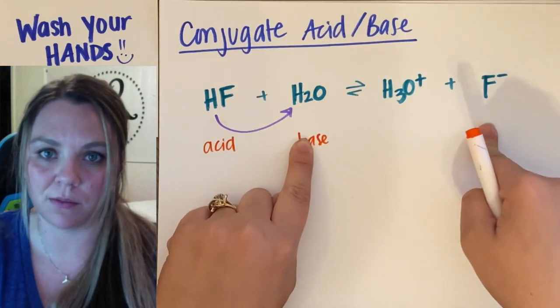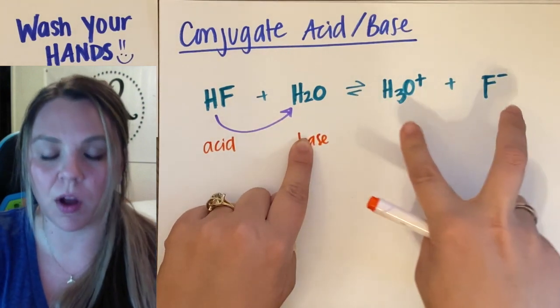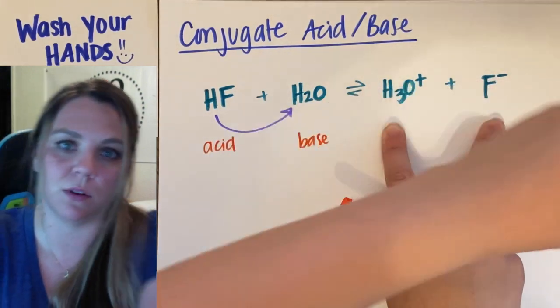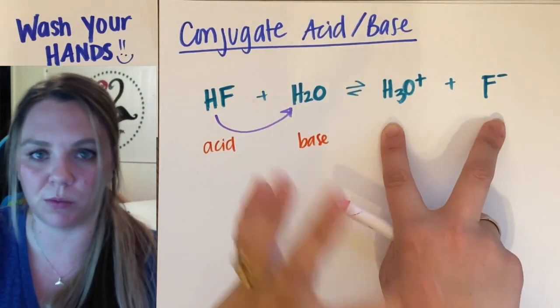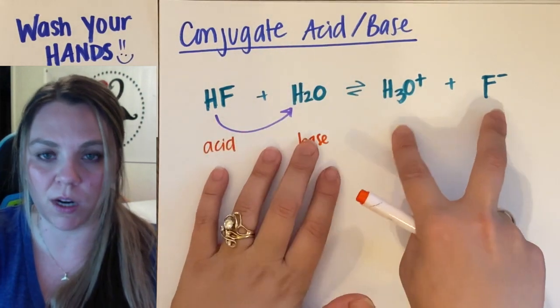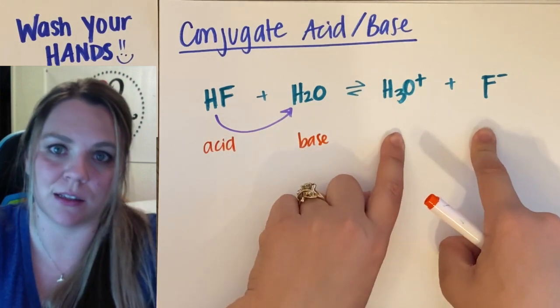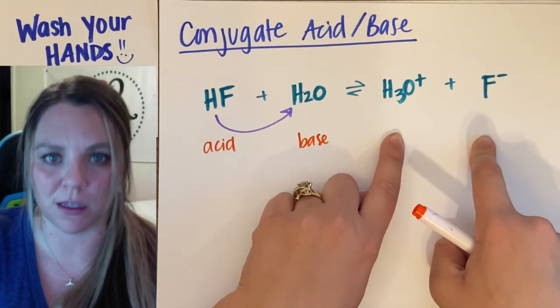Now, on the other side of my reaction, I am also going to have an acid and base for my reverse reaction. This is an equilibrium reaction. So one of these is going to be the conjugate acid. One of these is going to be the conjugate base.